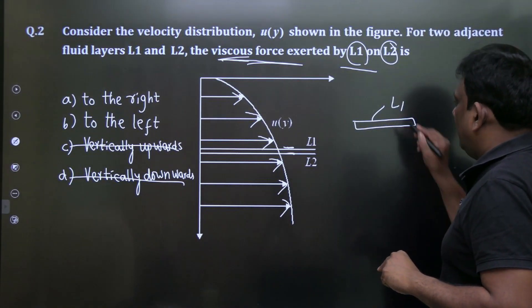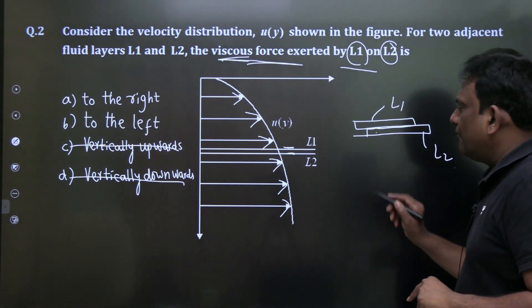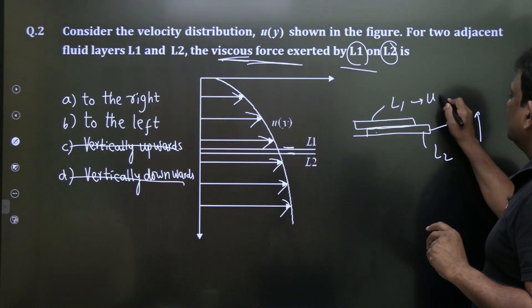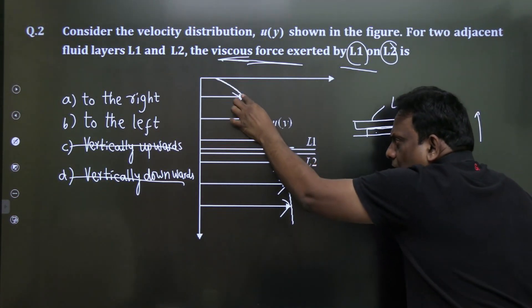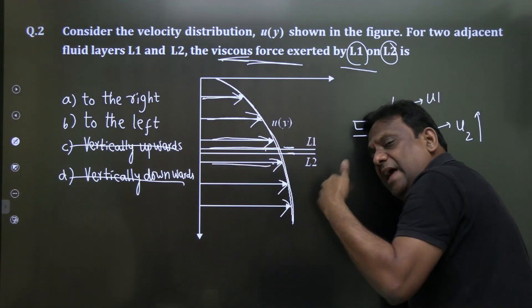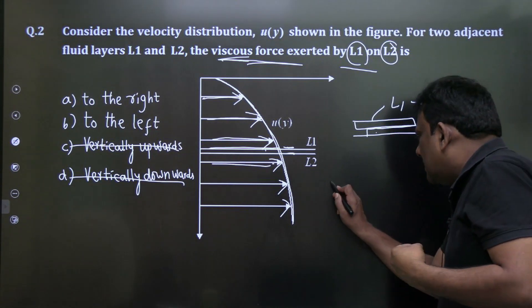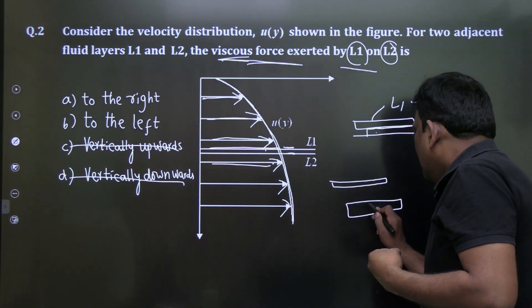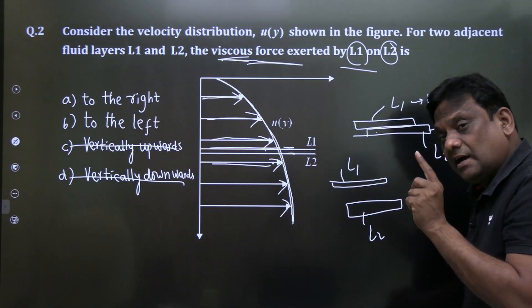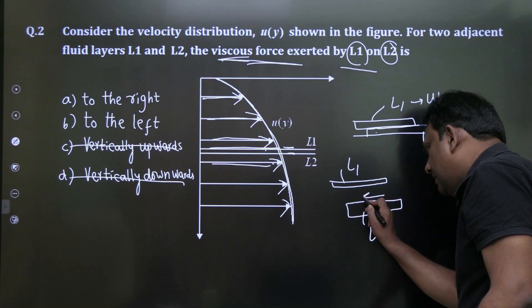Let L1 be the top layer and L2 be the bottom layer. The velocity of L2, U2, is greater than the velocity of L1, U1. Moving downward, velocity increases — so the bottom layer has higher velocity. Since L1 has lower velocity compared to L2, L1 will try to retard L2, exerting a force to the left.